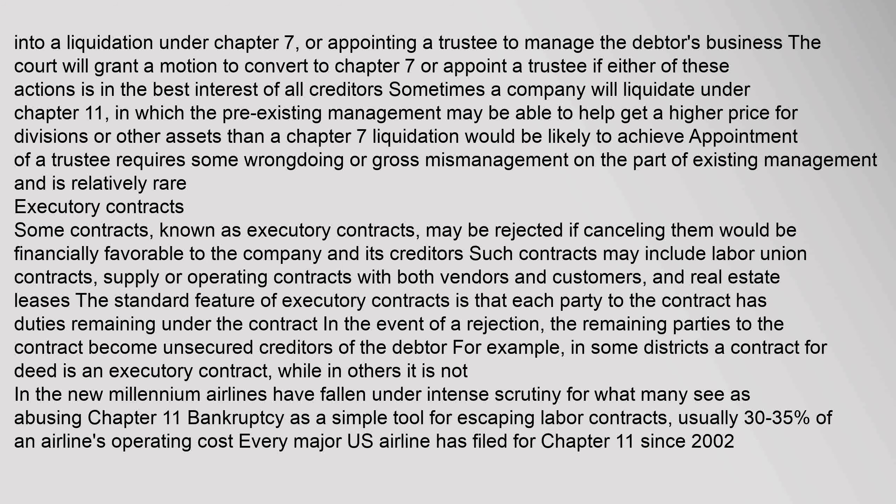Appointment of a trustee requires some wrongdoing or gross mismanagement on the part of existing management and is relatively rare. Some contracts, known as executory contracts, may be rejected if cancelling them would be financially favorable to the company and its creditors. Such contracts may include labor union contracts, supply or operating contracts with both vendors and customers, and real estate leases. In the event of a rejection, the remaining parties to the contract become unsecured creditors of the debtor.